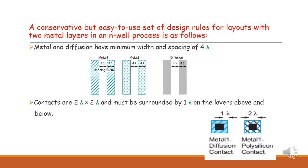Next, we look at design rules for layouts with two metal layers in an NL process. For metal 1, the minimum spacing between metals should be 4 lambda and the minimum width should also be 4 lambda. Similarly for metal 2, the spacing is 4 lambda and the width is 4 lambda. For diffusion, the spacing between diffusion regions is 4 lambda and the width of the diffusion is also 4 lambda.